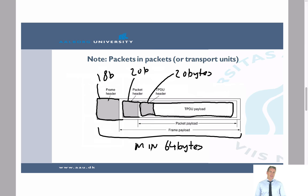It's important to understand this concept of having packets inside packets. If we assume that we are using IP and TCP running over Ethernet, and we look at the Ethernet frame, then we know that the Ethernet frame is at least 64 bytes, because we have this minimum frame length in Ethernet. Of this, we would have 18 bytes which would be the frame header, 20 bytes which would be the IP header, and then 20 bytes which would be the header of the transport layer — in the case of TCP.